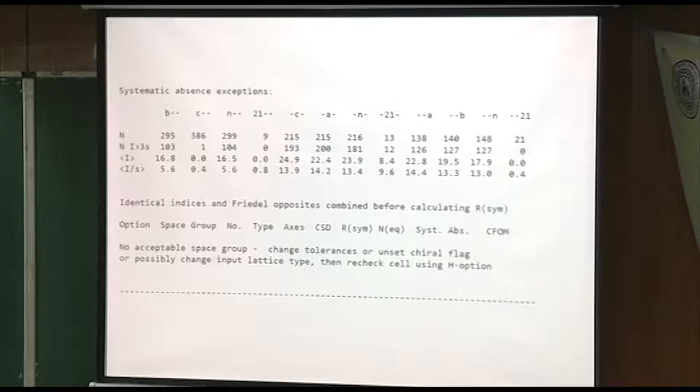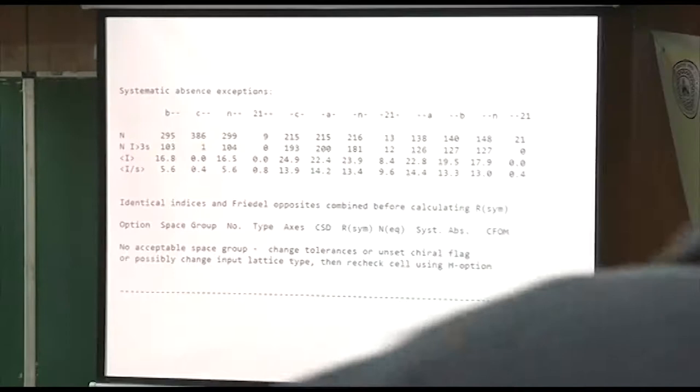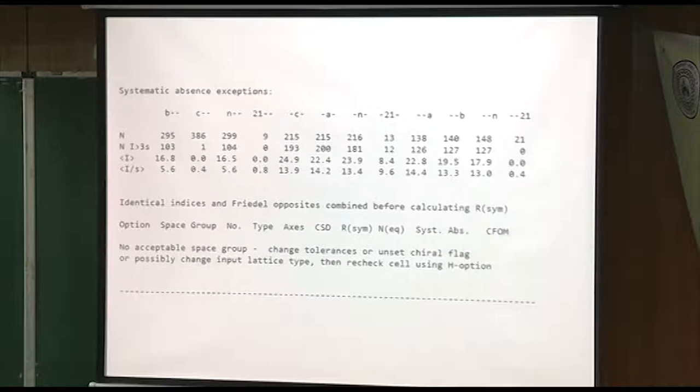Looking at this though, I want you to notice these extinctions right here, it's a C-glide, but it's in the A position in the space group. And here's a screw axis that's also in the A position. If it's monoclinic P21 over C, those should both be in the B position because it's the B axis that's unique in monoclinic.